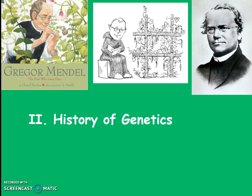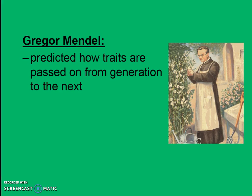Before we jump into genetics too far, we have to give credit to the founder of genetics, this guy here shown pictured in many different ways — and you do need to remember his name and what he did. His name is Gregor Mendel. Gregor Mendel is considered the father of genetics. He predicted how traits are passed on from one generation to the next. He used pea plants to do this.